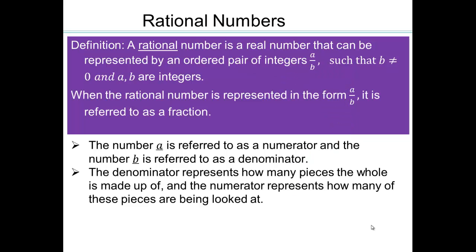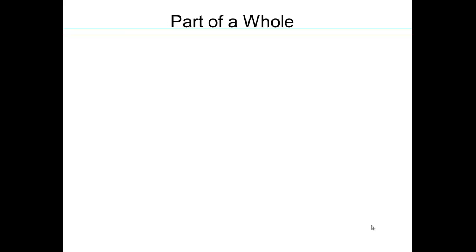In order to interpret rational numbers, we're going to focus on positive rational numbers first. You can think of a geometric shape that is cut up into equal pieces. The total number of pieces that the geometric shape is made up of is the denominator, and how many of those pieces you shade is the numerator. So let's take a look at some examples. This is the interpretation of fractions as part of a whole.